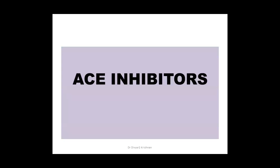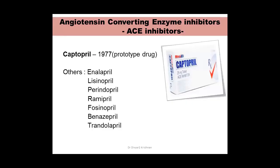Now we begin discussing ACE inhibitors. When writing a short note on ACE inhibitors, use the headings: examples, mechanism of action, actions, uses, and ADR. The first drug, captopril, is the prototype ACE inhibitor and came to market in 1977. Others include enalapril, lisinopril, perindopril, and ramipril. At minimum, remember enalapril, lisinopril, perindopril, and ramipril.